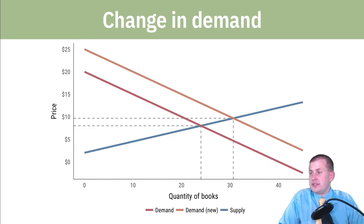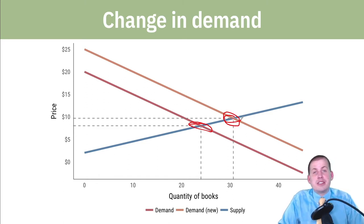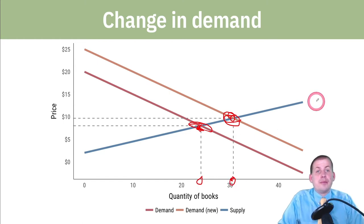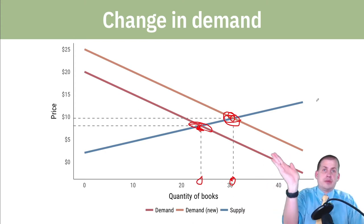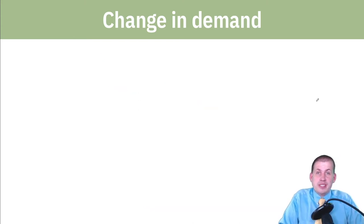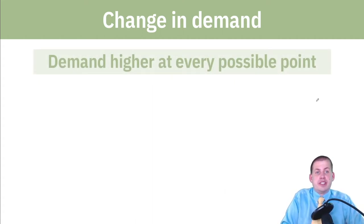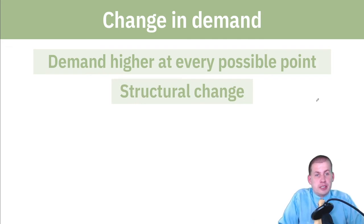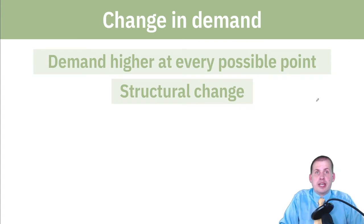If you look at this graph, we have this red line — that's some demand curve — and for whatever reason we're now at a new demand curve at this orange line, where there's been some sort of change in demand. Because of that, the price has gone up from eight dollars to ten dollars and now there's more being sold — we used to be selling 24 books, now we're selling about 31 books. This is what we call a change in demand, meaning the demand for a good is different at every possible point — the whole line has shifted, representing a structural change where preferences have changed.